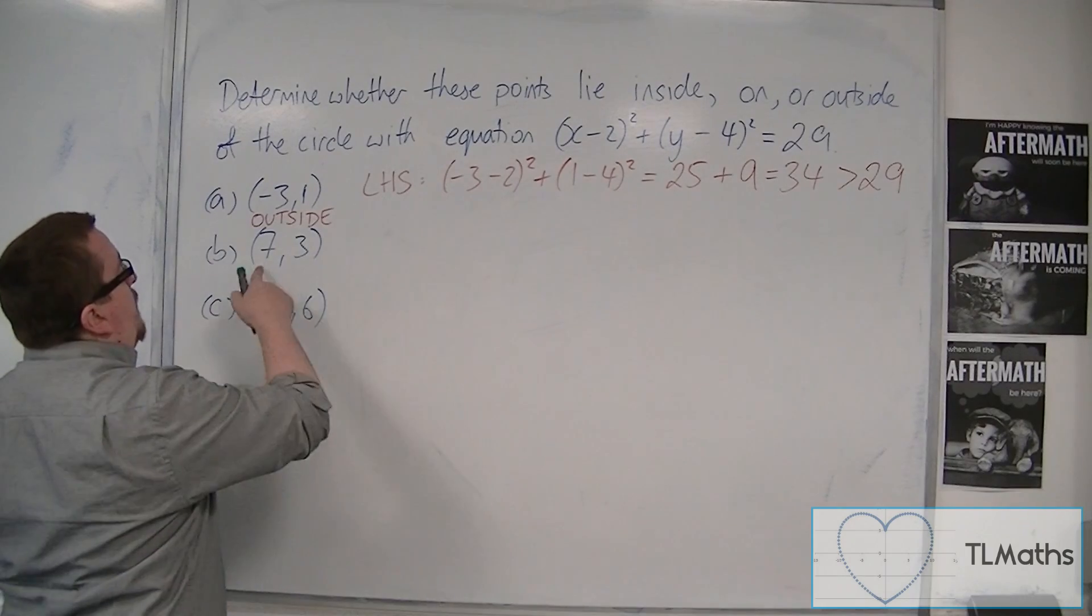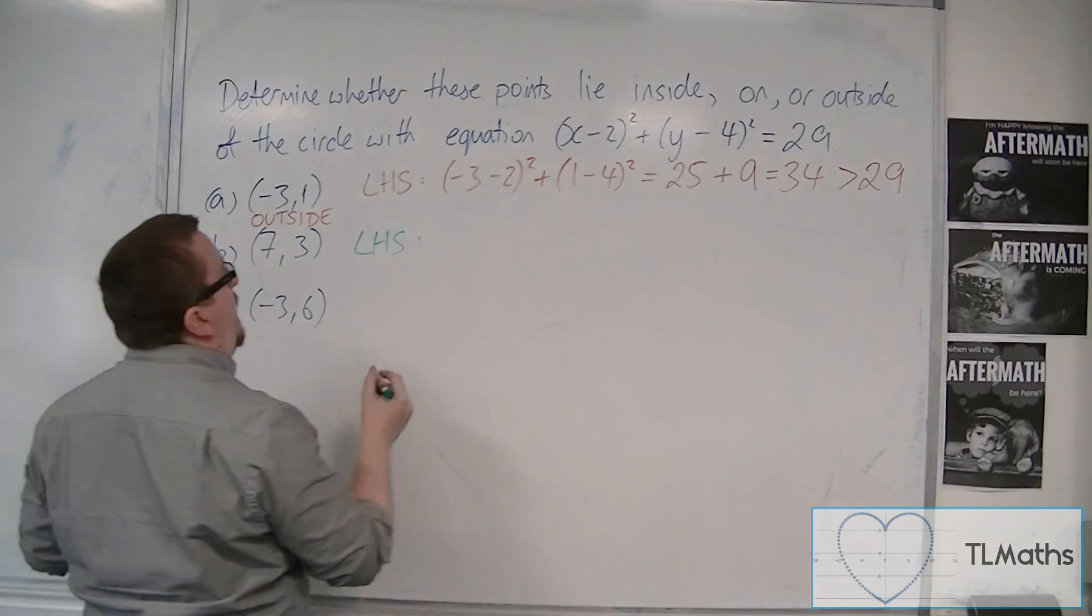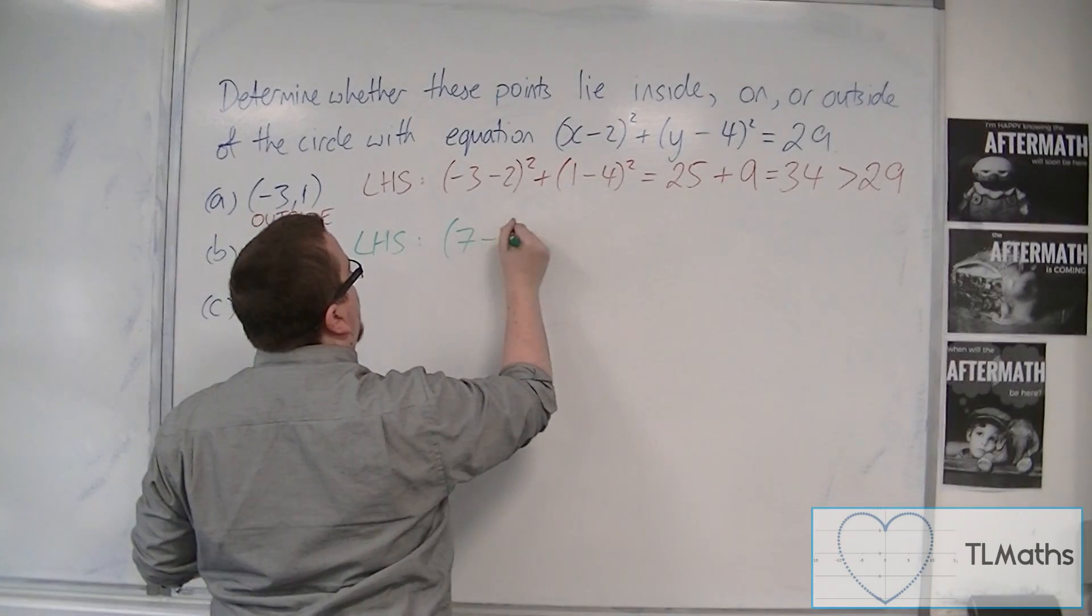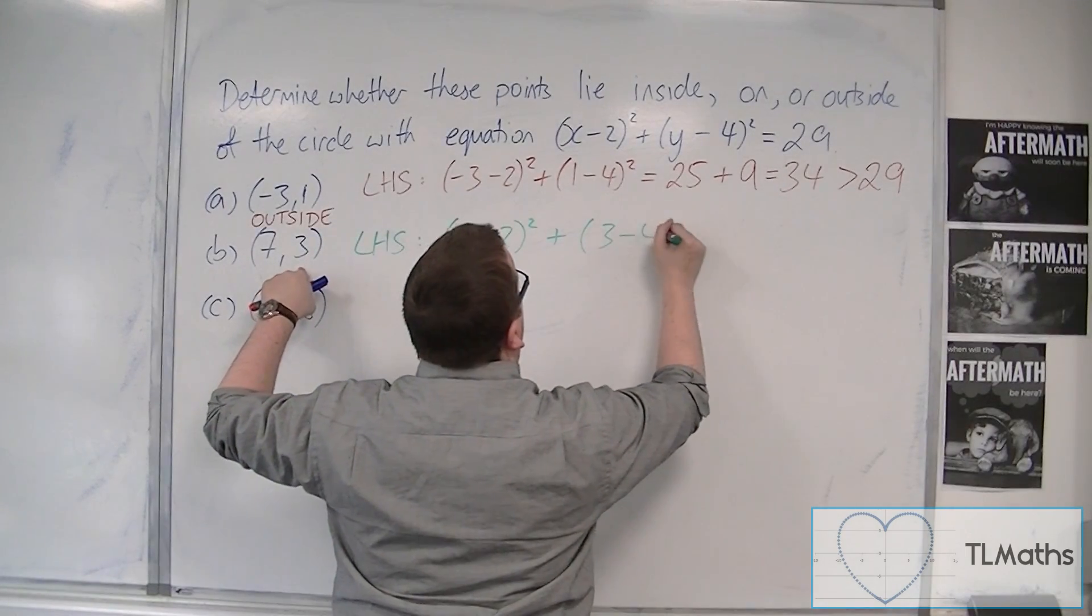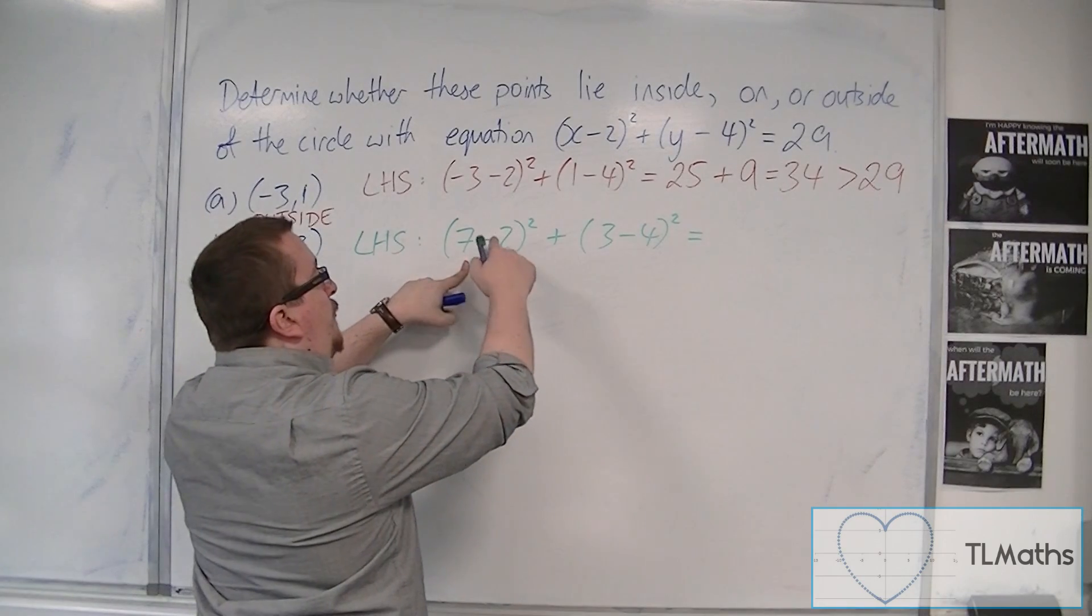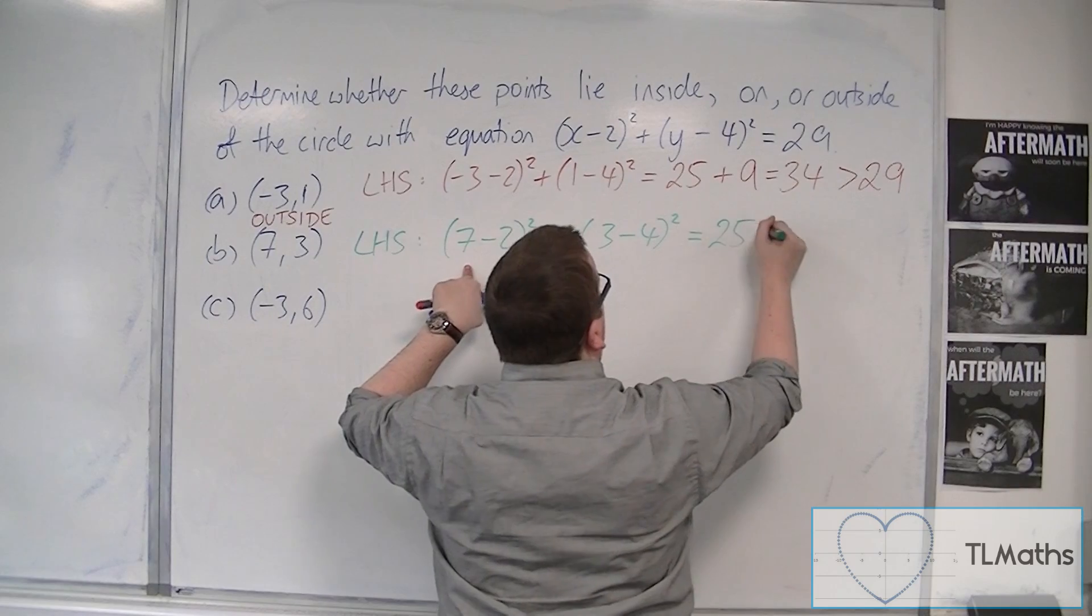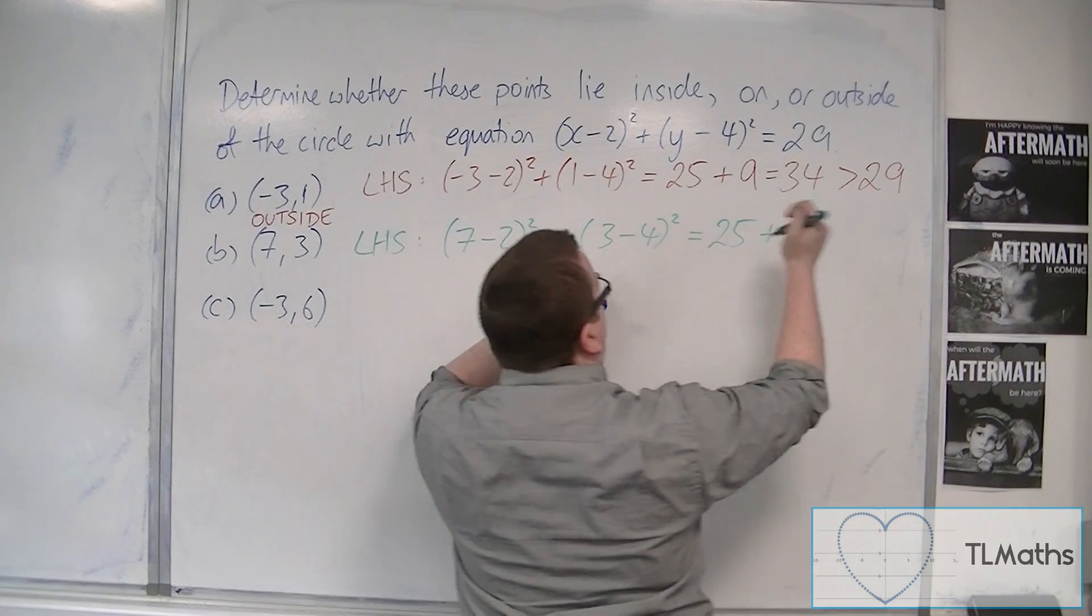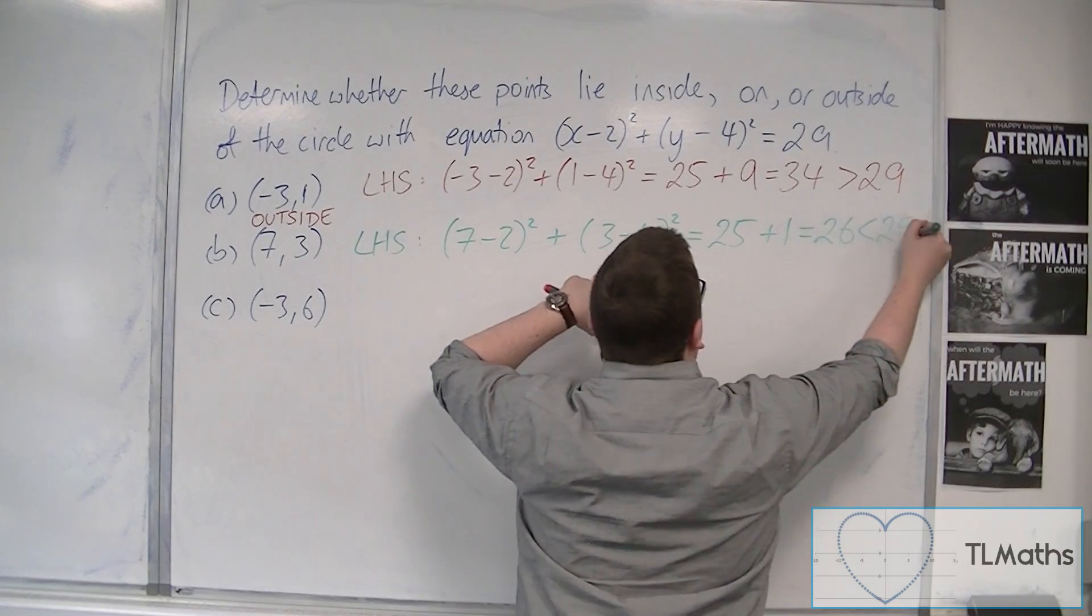If I then look at (7, 3), using exactly the same process, (7 - 2)² plus (3 - 4)². So we get 7 minus 2, that's 5, squared is 25. 3 take away 4 is -1, so -1 squared is 1. So that's 26, that's clearly less than 29 this time.